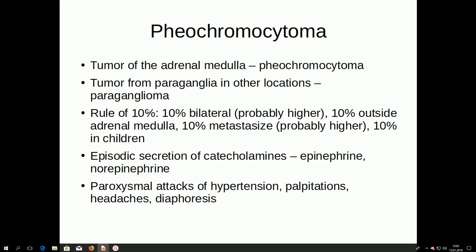The classical rule of 10% has changed a little over the years but is still quite useful for remembering the basic facts: 10% of pheochromocytomas are bilateral, 10% are outside of the adrenal medulla and called paraganglioma, 10% can metastasize, and 10% can be seen in children. There are now a higher number of familial cases, probably closer to 30%.